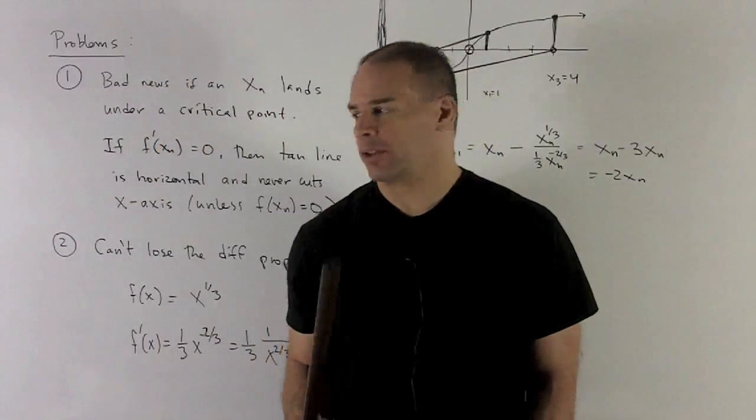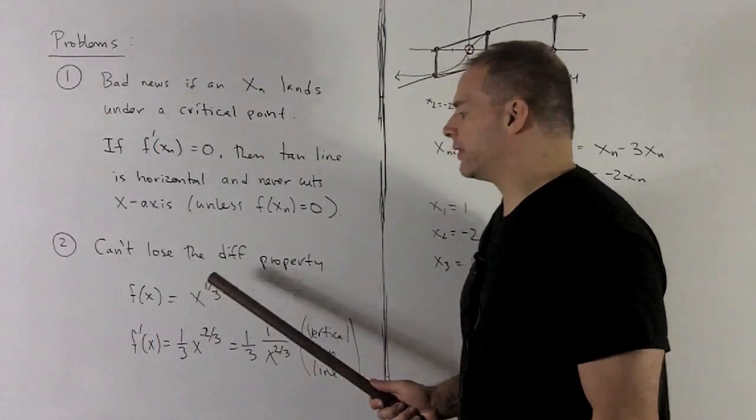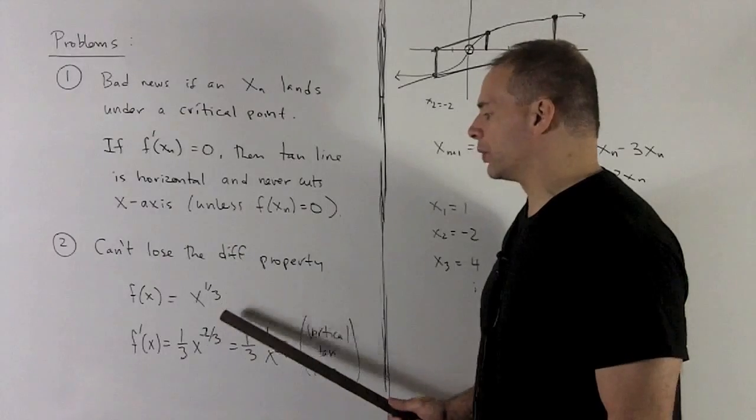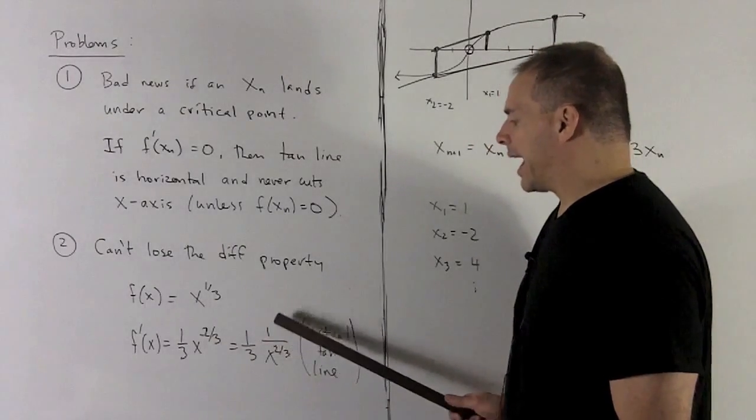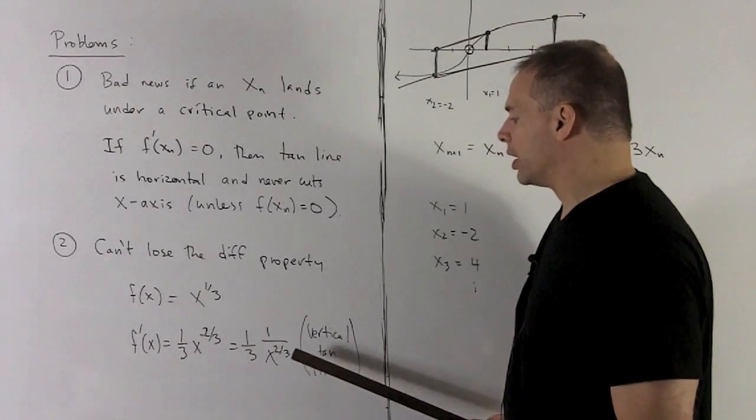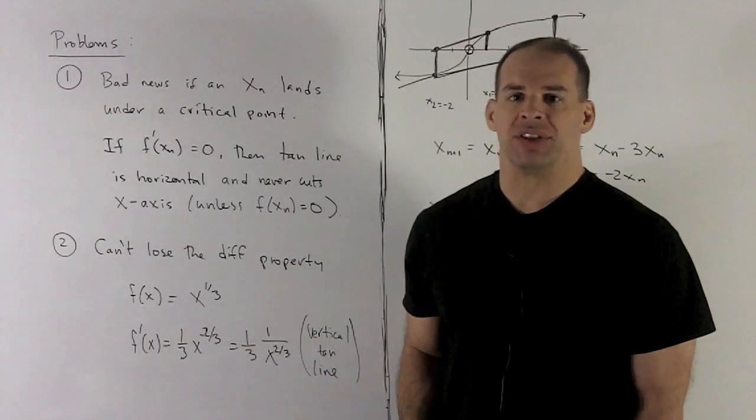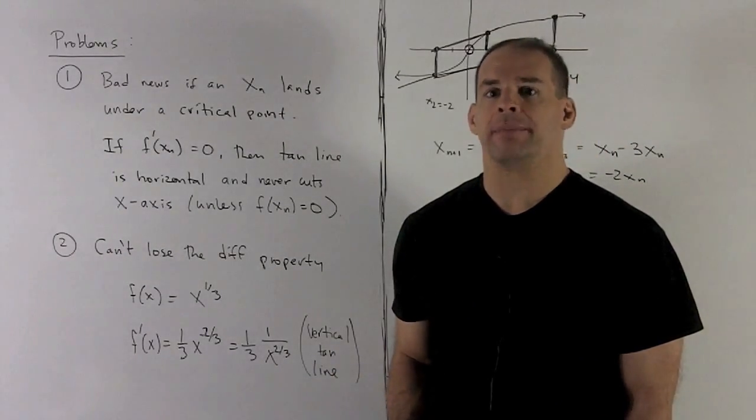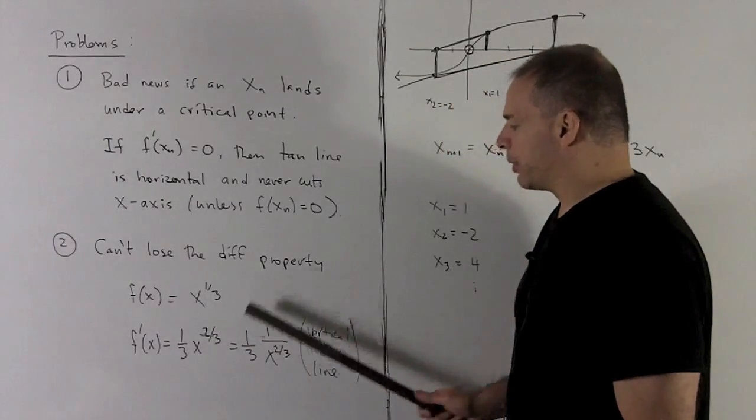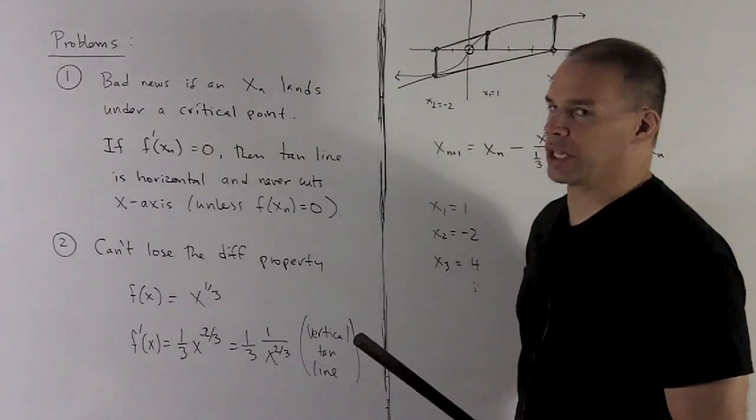We see that when we take the derivative. If I take the derivative of this, I get one-third x to the minus two-thirds. Cleaning that up is one over three x to the two-thirds. So, if I put a zero in here, we're not allowed to divide by zero, so that's going to mean I'm looking at the type of critical point that gives you a vertical tangent line.